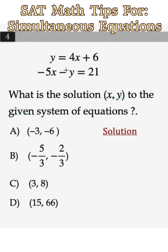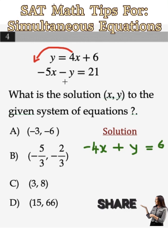However, before you continue with the elimination method, it's important that you rearrange the equation so that minus 4x plus y will be equal to 6. Then minus 5x minus y still remains 21.